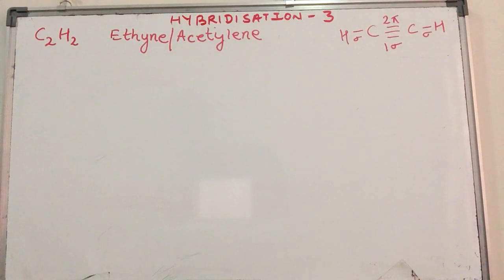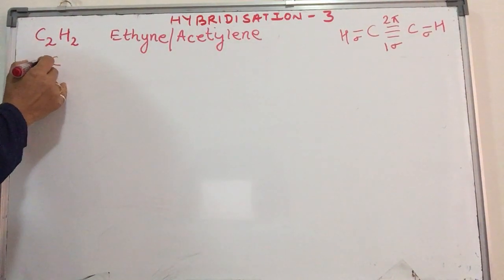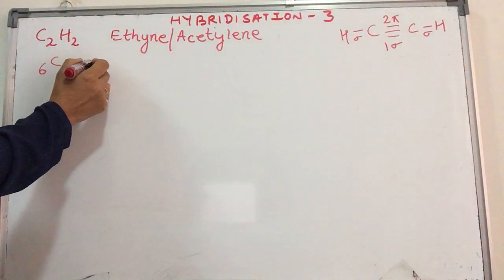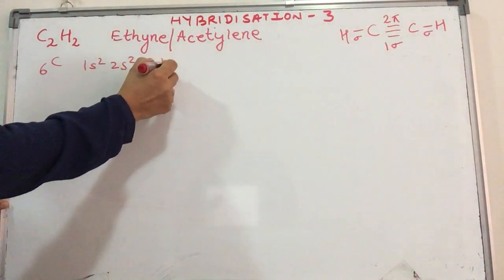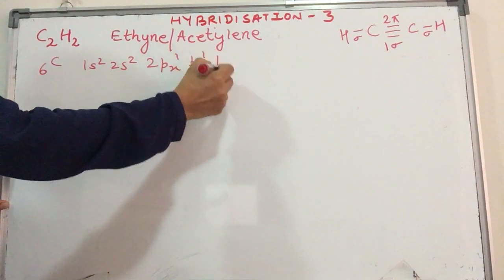Let us try and understand how this happens and what type of hybridization will happen here. We have carbon, atomic number 6, electronic configuration 1s2, 2s2, 2px1, 2py1, 2pz1.